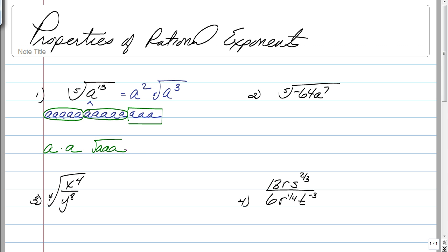But these 3 a's cannot evenly be taken out of the 5th root, so they have to stay inside. And that's going to leave us with a squared 5th root of a cubed. So even if you were to go back to the old ways of simplifying radicals with a factor tree, it would still work. But it's much easier to just ask yourself how many times does 5 go into 13, twice? So you can pull out an a squared, and then since there's 3 left, you leave all 3 inside.